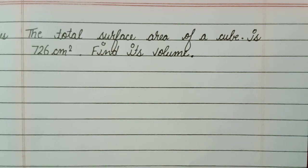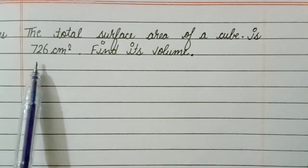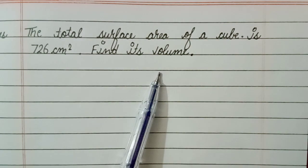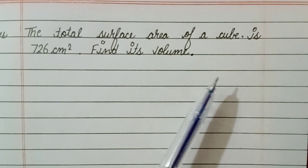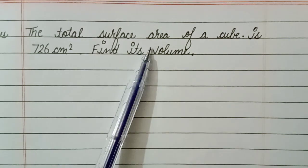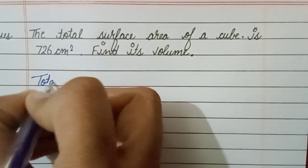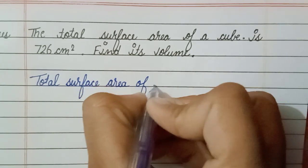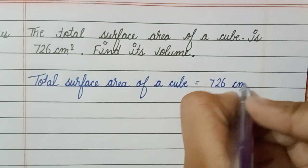Hi friends, welcome back to my channel. Today we will solve this question: the total surface area of a cube is 726 centimeter square, then find its volume. We have to find the volume of a cube, and the formula for volume of a cube is a cube — that means side cubed. First, we have to find the side. The total surface area of the cube is 726 centimeter square.